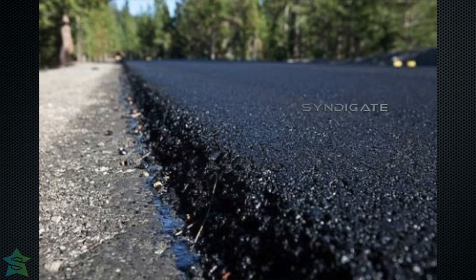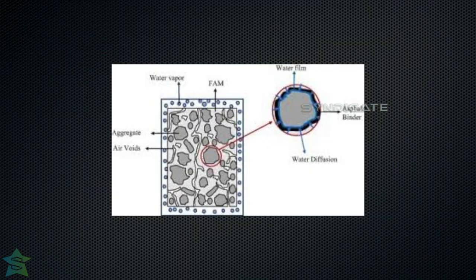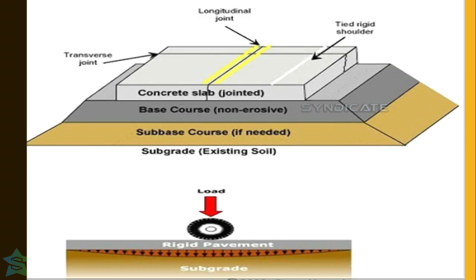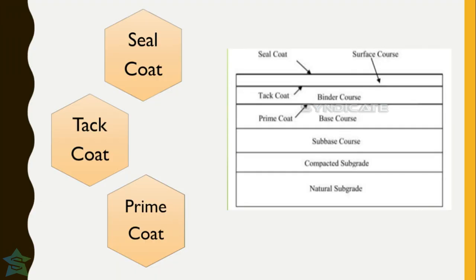The loads applied over the flexible pavement are transferred through the grain-to-grain transfer mechanism. In case of rigid pavements, the layers are similar to those of flexible pavements, but instead of bituminous layers at the top surface, a concrete slab of grade M35 or M40 is placed. The concrete slab takes up a large amount of the load, and there will be only less deflection comparatively to bitumen.